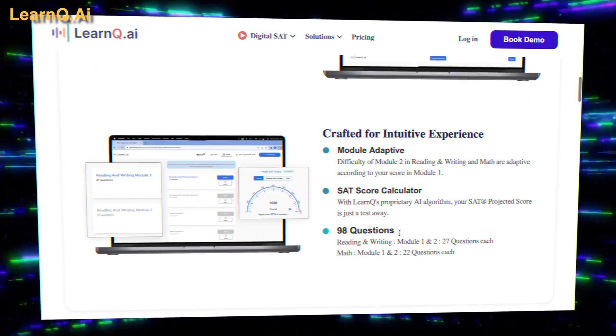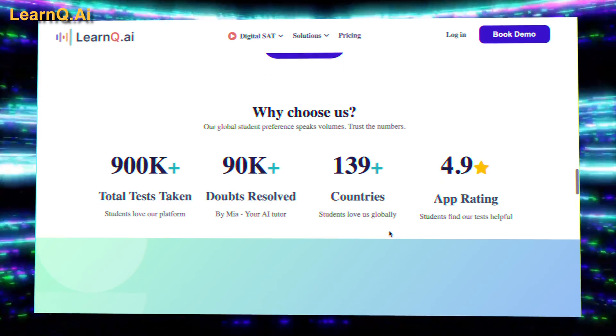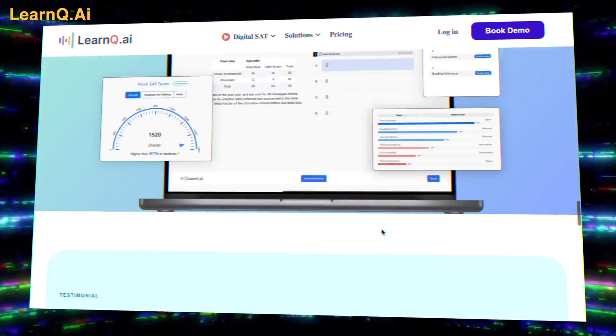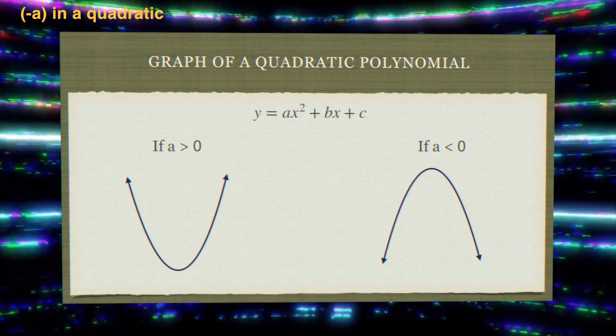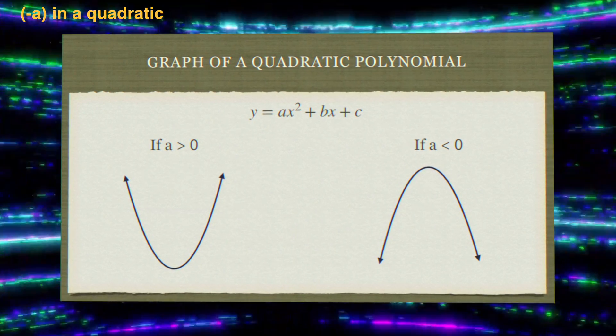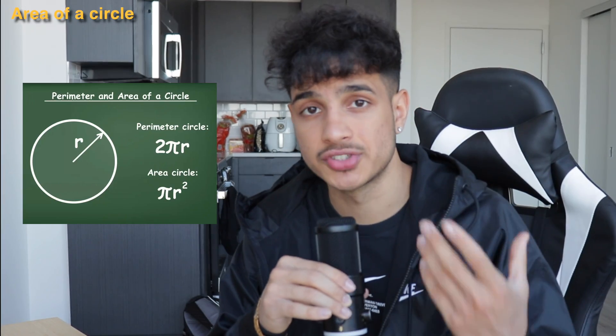Use LearnQ.ai for free DSAT practice exams that reflect the real DSAT. Start your studying with math. Negative A means a quadratic is an upside-down U shape. Circumference is 2 pi R. The area of a circle is pi R squared.